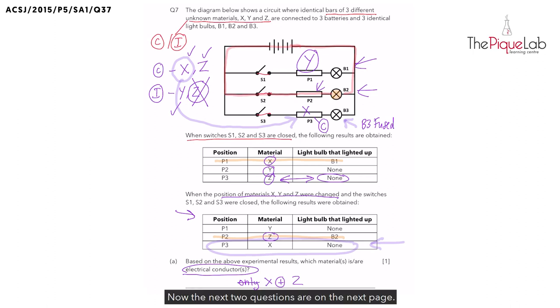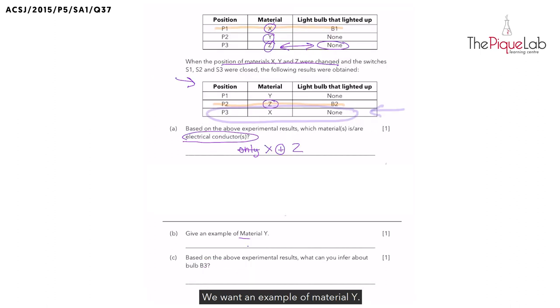Now the next two questions are on the next page. So let me shift the screen upwards. We want an example of material Y. Remember, material Y is an electrical insulator. So wood and plastics are common examples of electrical insulators. I'm going to write one of them down now.